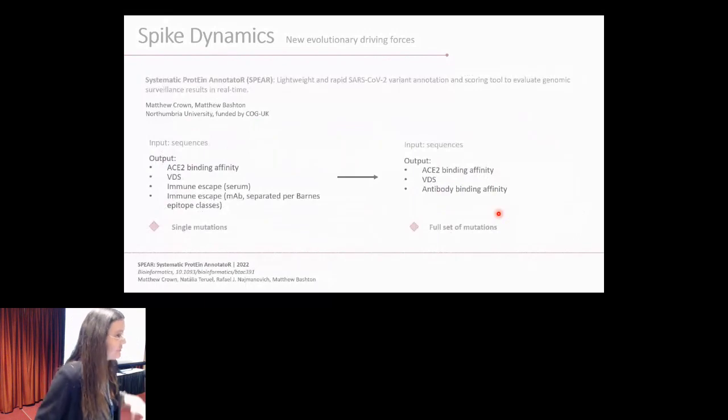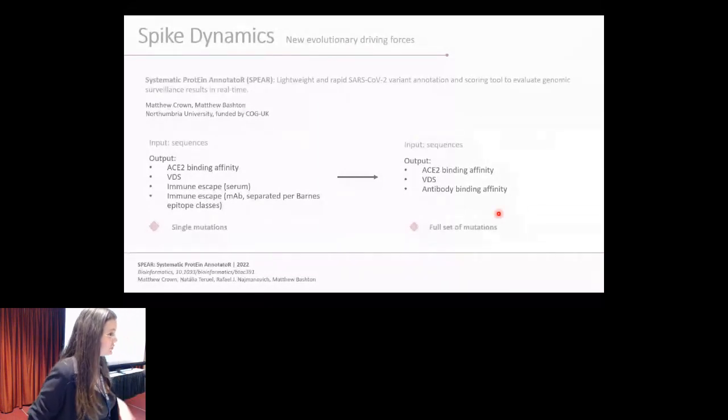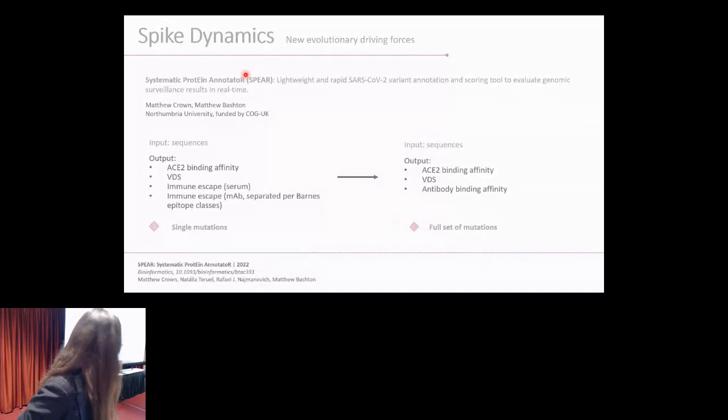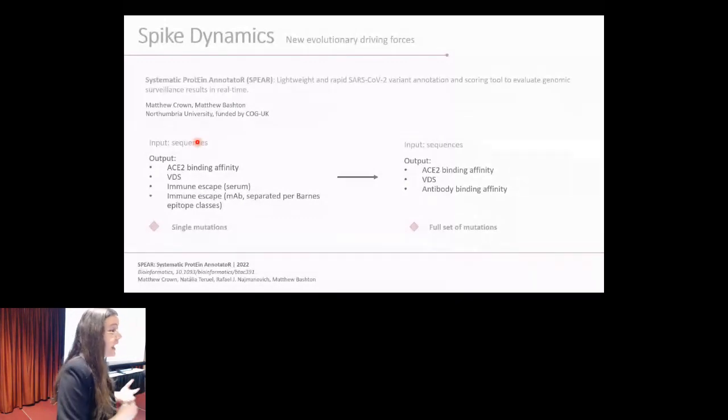Why do we want to do that since we have, for example, the deep mutational scan for binding for many single mutations? We want to do that because, as I mentioned in the beginning, our tool is currently coupled with methods to monitor and characterize new variants. Currently, it is coupled to SPEAR, which is a systematic protein annotator for sequences, which is work done in collaboration with Northumbria University and funded by COG-UK. Currently, it takes as input sequences and gives as output pre-calculated measures, so experimental measures for binding to the receptor and immune escape and our measures for VDS when it comes to the occupancy.